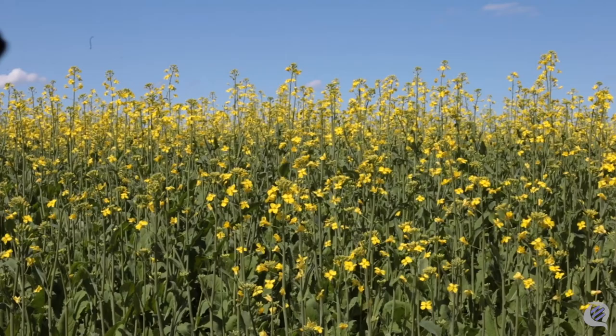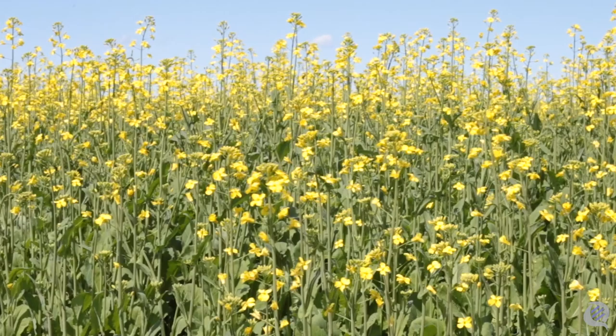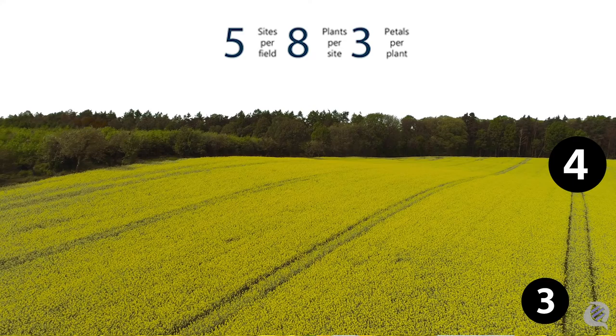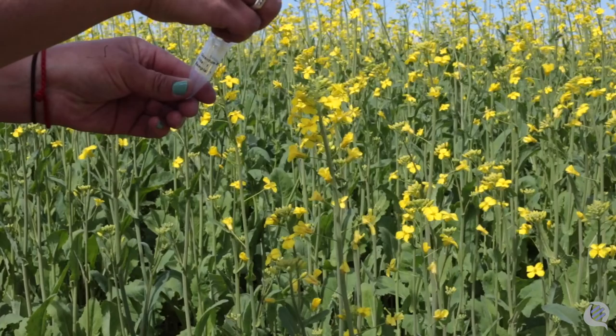Your Q-Protect kit comes equipped with everything you will need to sample your crop. Each kit contains 40 tubes to place your samples in, a set of tweezers for collection, and a submission form to fill out your information. One kit can test up to 320 acres. Identify the field you wish to sample and identify five sites in the crop, taking petals from eight different plants. Collection is important to ensure you are receiving an accurate representation of your field.